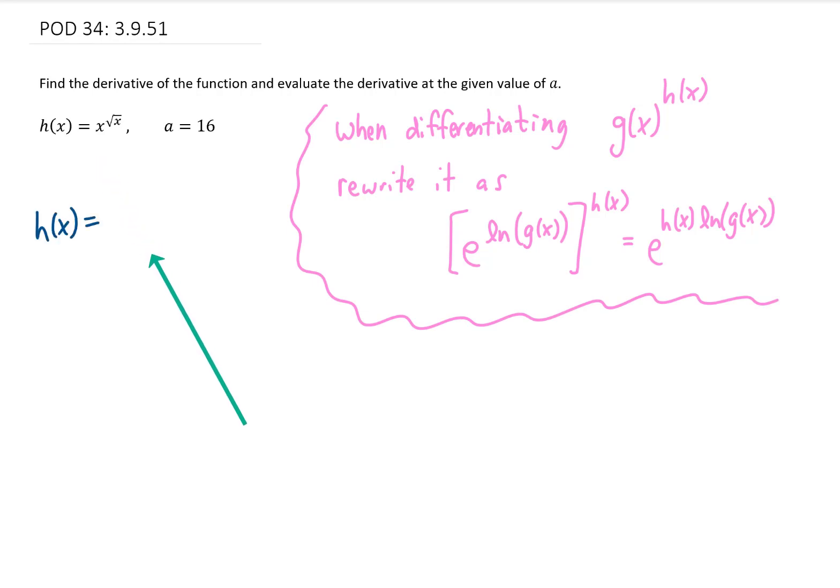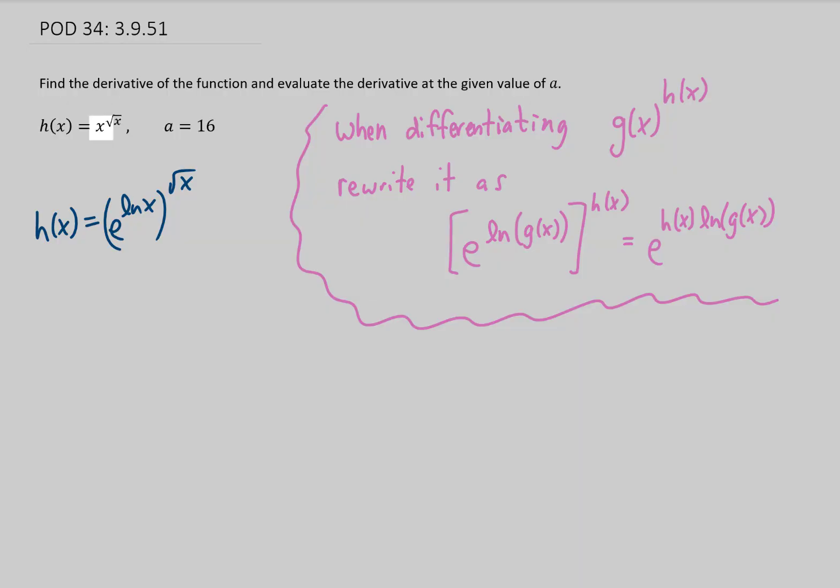We're going to rewrite x to the power of the square root of x as e to the natural log of x to the power square root of x. Notice that what we did there is we just rewrote this x as e to the power of natural log of x. Now what we can do is use the rules for exponents.